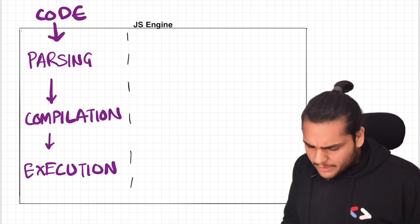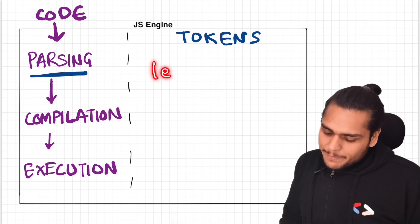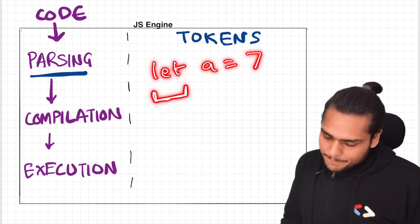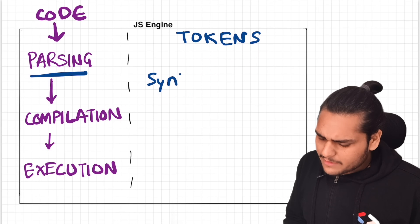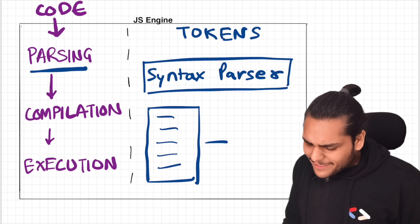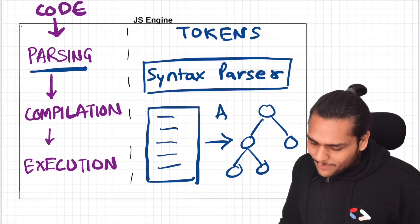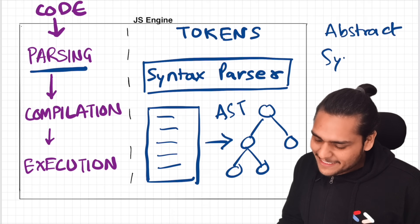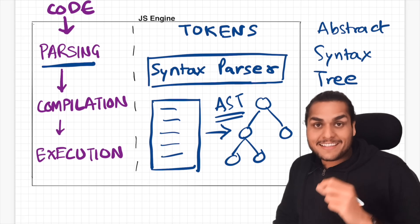During the parsing phase, the code you write is broken down into tokens. For example, if you write 'let a = 7', it is broken into tokens: 'let' is one token, 'a' is another token, '= 7' is another token. There is also something known as a syntax parser whose job is to take the code and convert it into an AST — an Abstract Syntax Tree. It sounds complicated, but it is not.